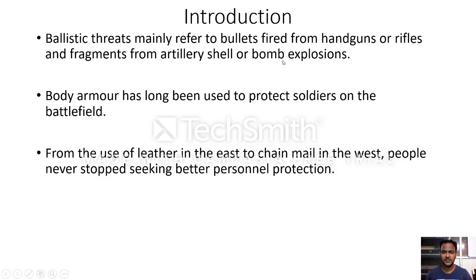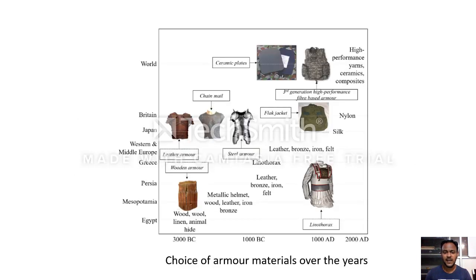In order to protect from these ballistic threats, body armor or ballistic armor has long been used to protect soldiers on the battlefield. From a historical perspective, from time immemorial we have been using various types of materials — from the use of leather in the east to chain mail in the west — people never stopped seeking better personal protection. This diagram shows the choice of materials over the years, from 3000 BC.